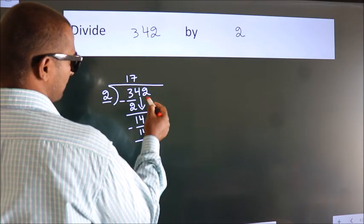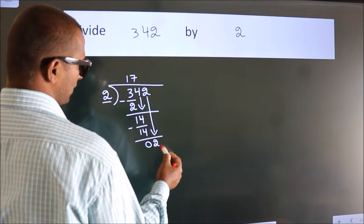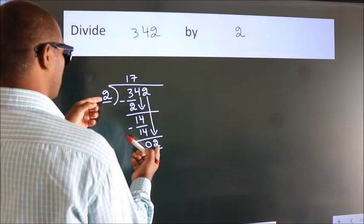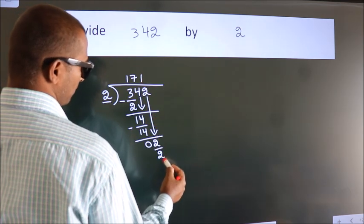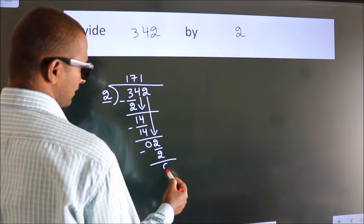After this, bring down the beside number. So, 2 down. So, 2. When do we get 2? In 2 table. 2 1s 2. Now, we subtract. We get 0.